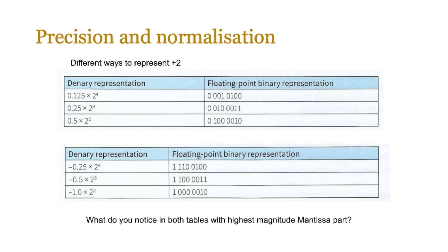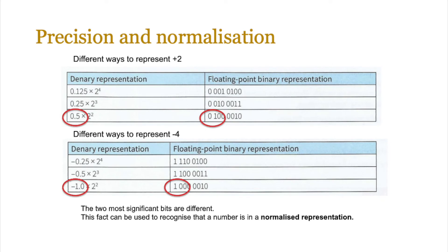Pause the video and look at both tables carefully, specifically the right-hand column showing the floating-point binary representation. The first bit is the sign bit, the next three bits are the mantissa, and the last four bits are the exponent values. Look at which binary representation has the biggest mantissa value - 0.125, 0.25, and 0.5. Quite clearly in the first table, 0.5 is the highest magnitude. You should have spotted that when the magnitude is the largest, there is a pattern emerging between the first two bits of each set of values. The two most significant bits are different for the highest magnitude values.